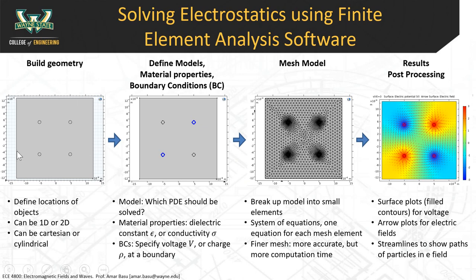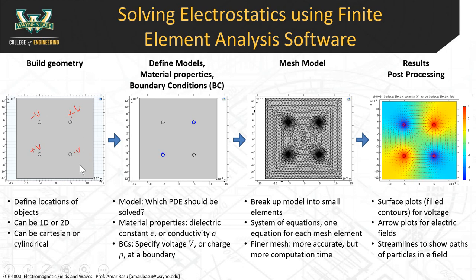The first thing we do is build the geometry — we have to draw out what we're trying to simulate. Today we're simulating a quadrupole. We have four points at different voltages: two are positive and two are negative, all at a constant magnitude. The geometry can be one-dimensional, two-dimensional, or three-dimensional, in Cartesian or cylindrical coordinates — both are supported in COMSOL. Next, we define our model, material properties, and boundary conditions.